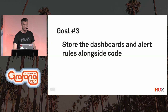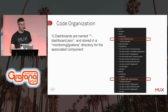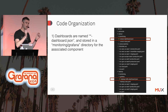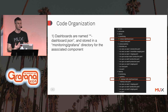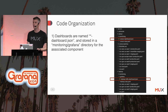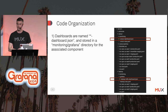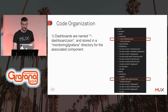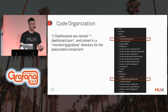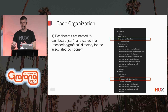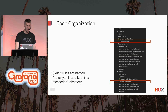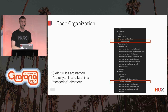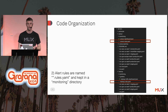Goal number three was to store dashboards and alerting rules right alongside the code. We have a pattern of naming dashboards as wildcard-dashboard.json, storing them in a subdirectory of the related component. The process for developing or modifying a dashboard is: go to your local dev cluster or staging cluster, work on the dashboard, export to JSON, and check it into the repo. You then submit a pull request, and it'll be reviewed and deployed automatically. A similar process applies for alerting rules, with a naming pattern of wildcard.rules.yaml.